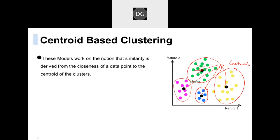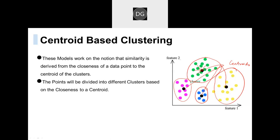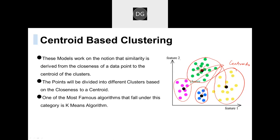These models work on the notion that similarity is — the closest the better the cluster. As I told, from the closest to the cluster — one of the centroid-based algorithms — the K-means algorithm.